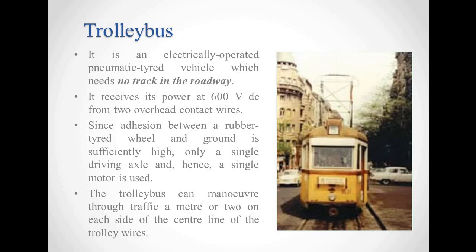These are the two types of AC locomotives studied in today's video. Between the two, trolley buses are superior to tramways. With this we end the lecture. I hope the lecture was clear to you. We will continue with further topics in the next lecture. Thank you.